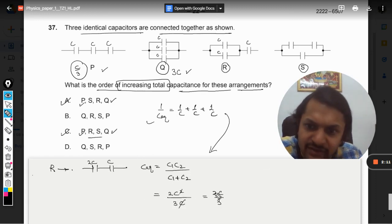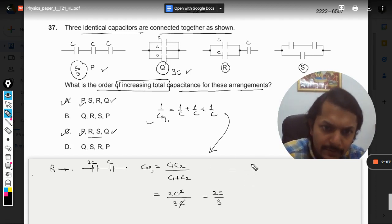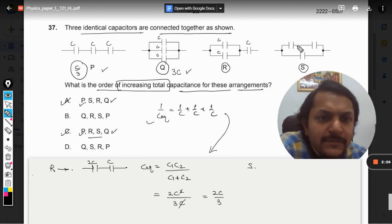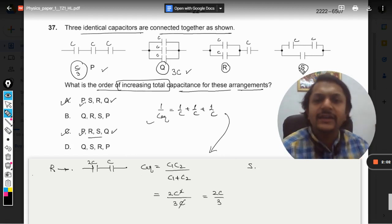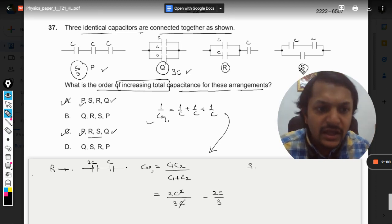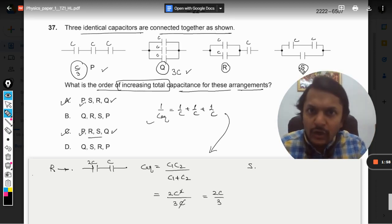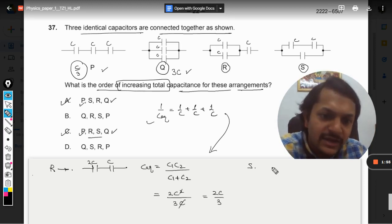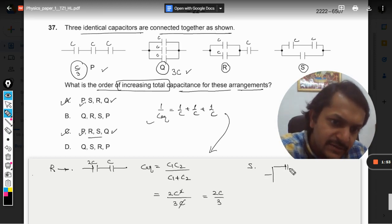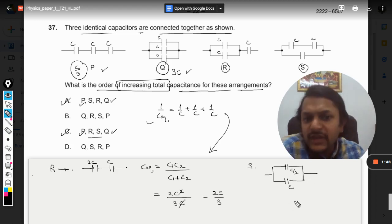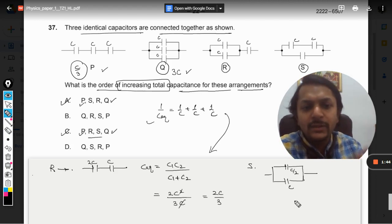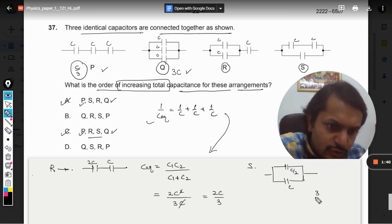And what about S? Yes, this C and this C are in series, so again it will be divided by 2 because there are only two capacitors. So this will become C/2. So our intermediate circuit will look like this: C/2 and C, and both of them are in parallel. They will be simply added. So 1 plus 1/2 is 3/2, that is 1.5. So it is coming out to be 3C/2.